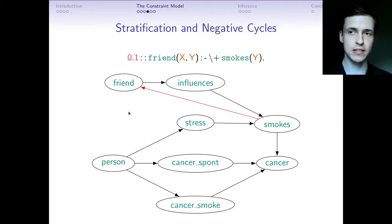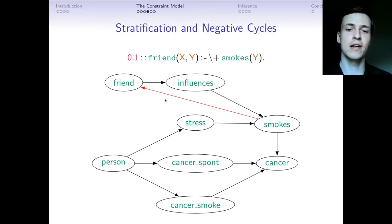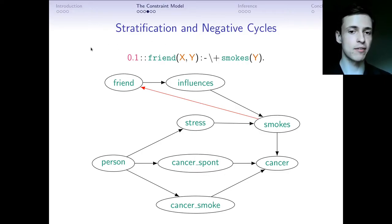It's easy to see intuitively how a negative cycle disrupts the semantics: if the probability of friend increases, then the probability of influences also increases, which increases the probability of smokes, which then decreases the probability of friend. We want to avoid such cycles. We currently use simple graph-theoretic algorithms to detect them — when a cycle is detected, we discard that program and look for others.